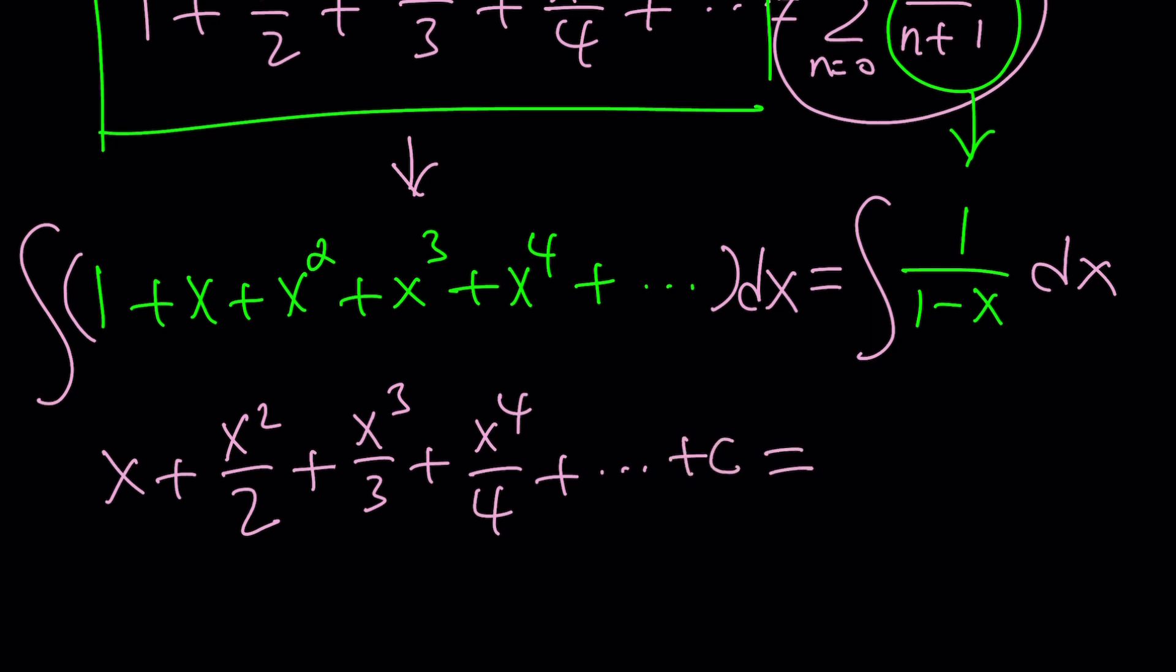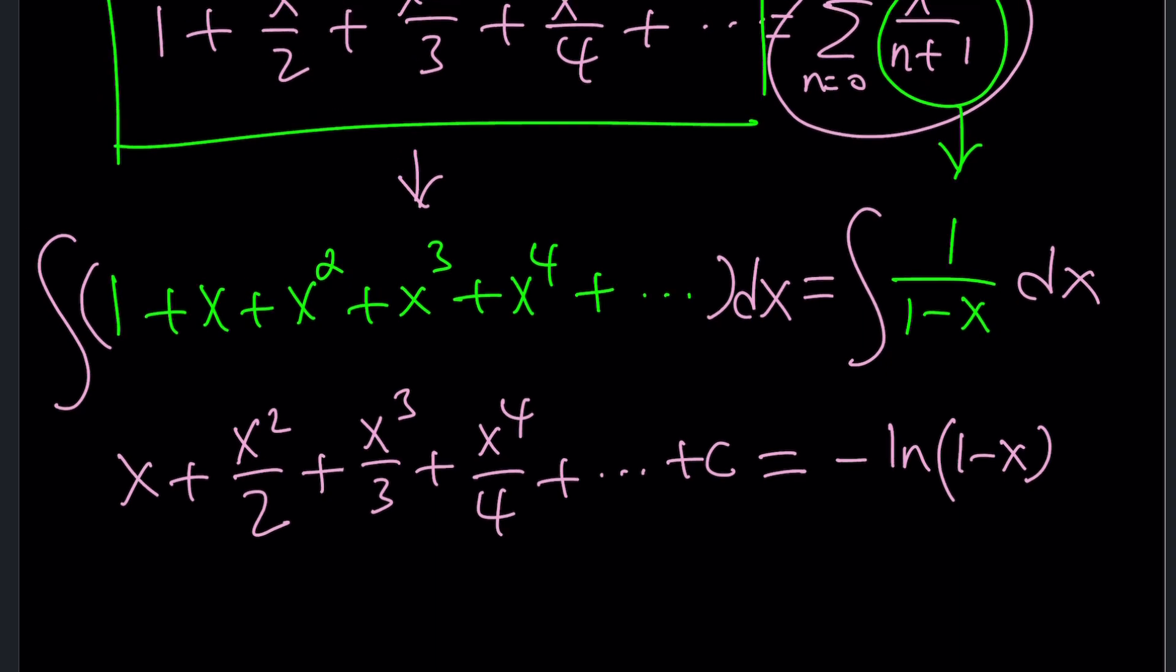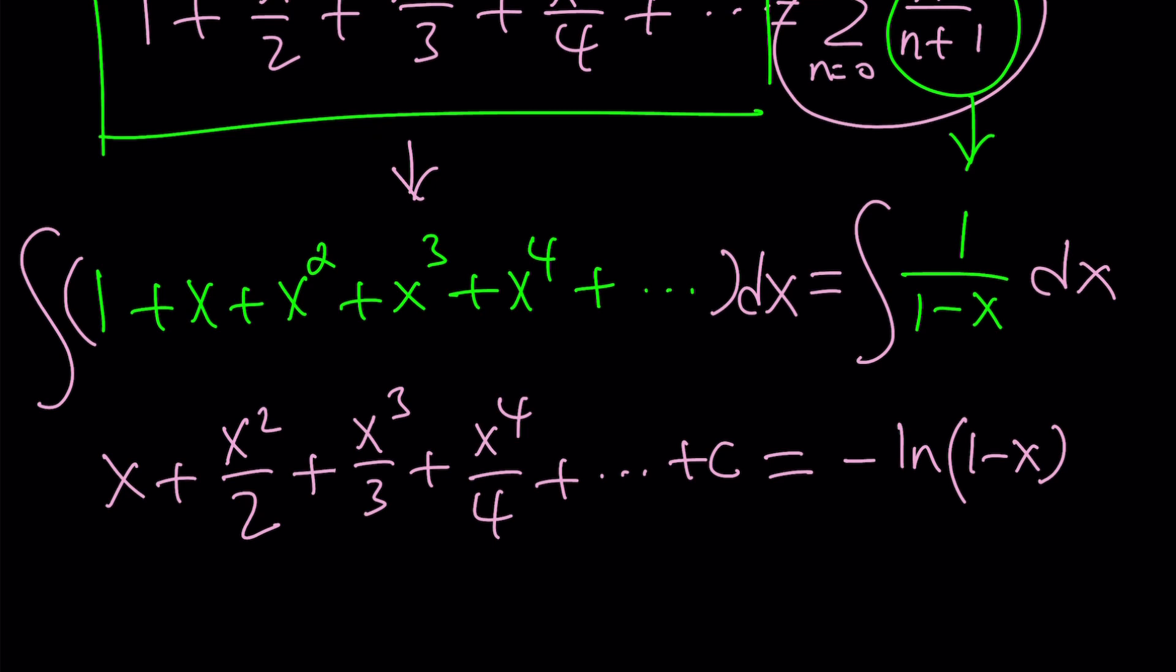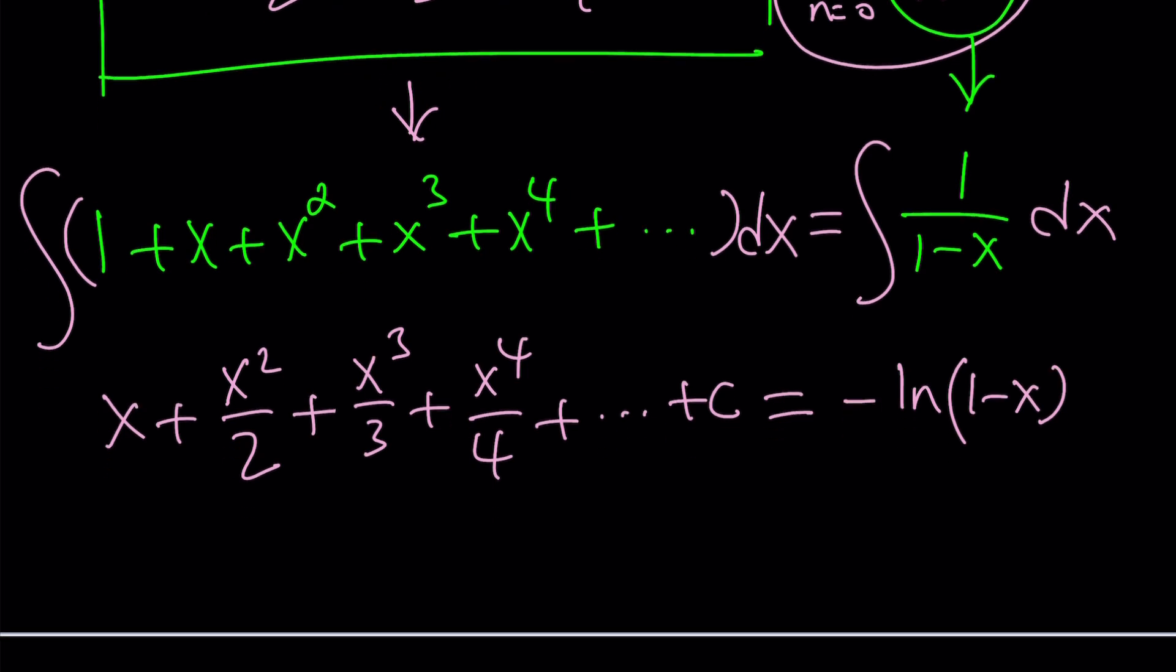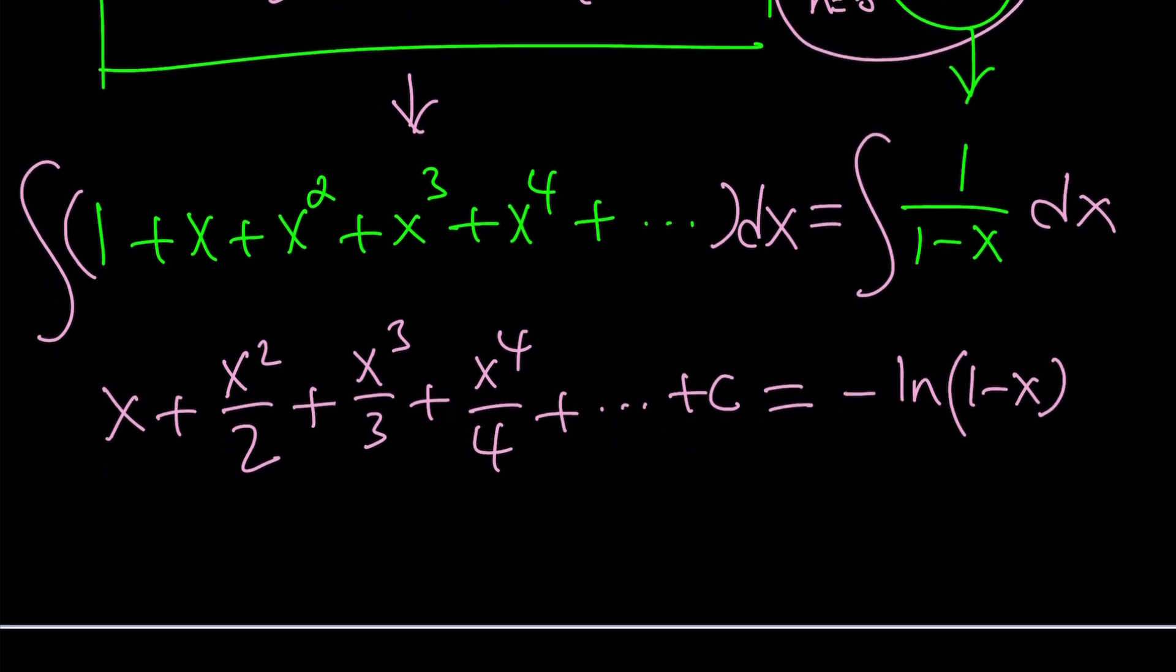I'm going to add it on the left-hand side. And on the right-hand side, if you integrate this, you're going to get negative ln 1 minus x. The reason I don't use an absolute value is because x is less than 1, so 1 minus x is always positive. Make sense? That is correct.